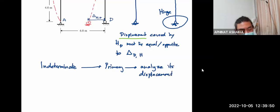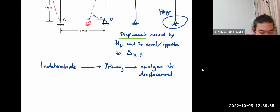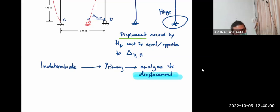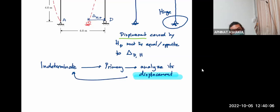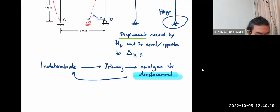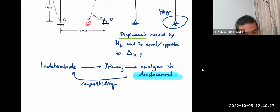We need to be able to figure out how to analyze the displacement of the primary structure so that we can go back and solve the indeterminate, because it's only after we analyze the displacement that we can create the compatibility equations that we need. So we use compatibility.